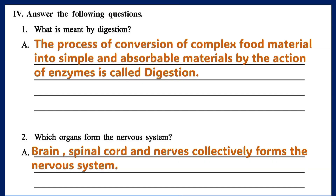Question 2: Which organs form the nervous system? Answer: Brain.